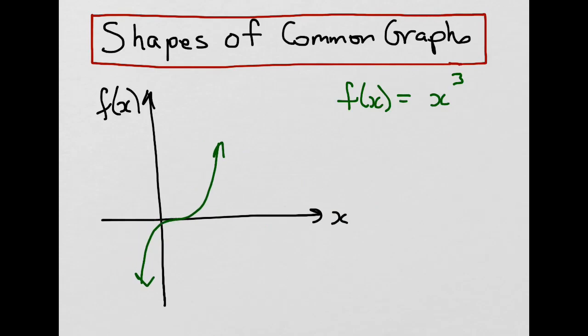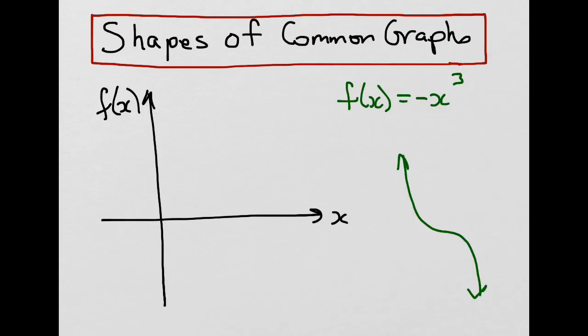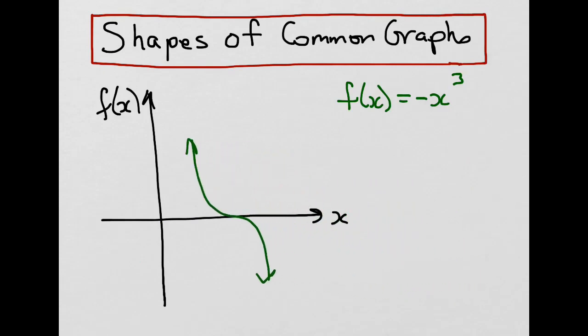Like before, let's see what happens if we change some parameters by adding a negative in front. What happens is that it flips. So on the grid, it goes through the origin still at (0, 0), but it starts at the top left and moves down to the bottom right.